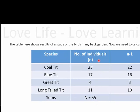The first thing you'll see is that we add up the number of individuals in total and we find that big N or capital N is equal to 55. So, we've got 55 individuals all together.